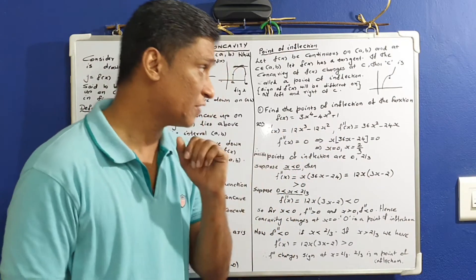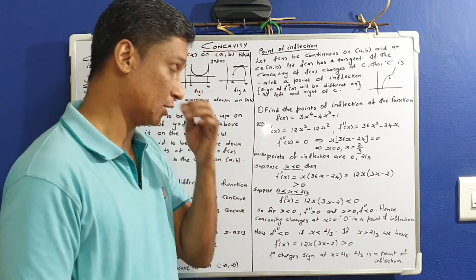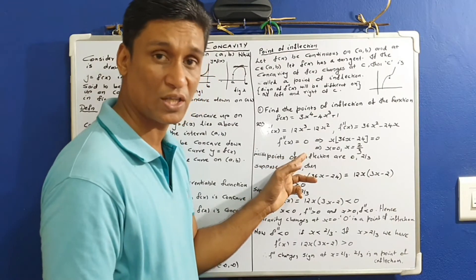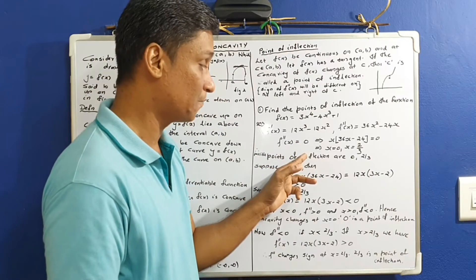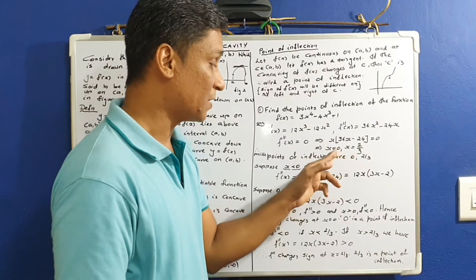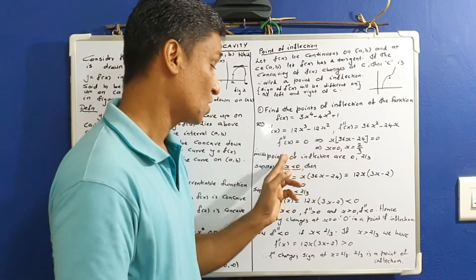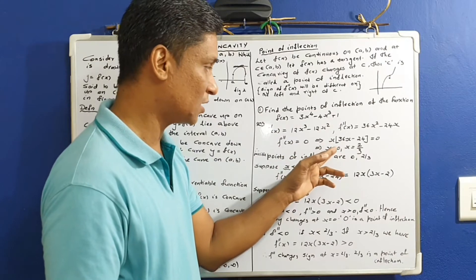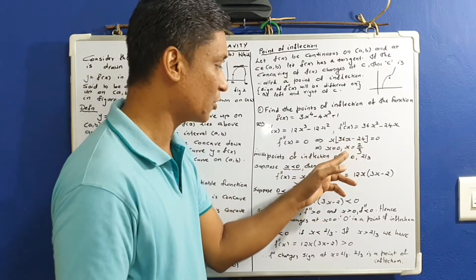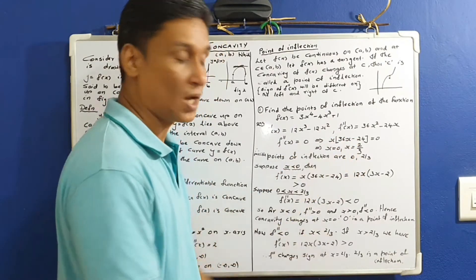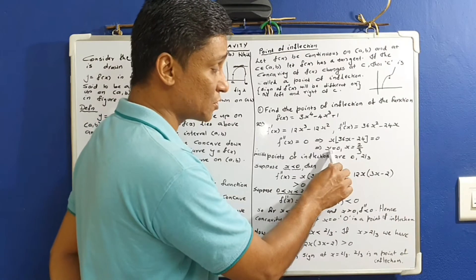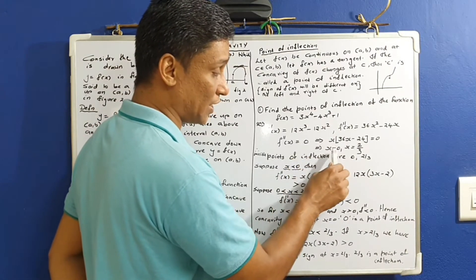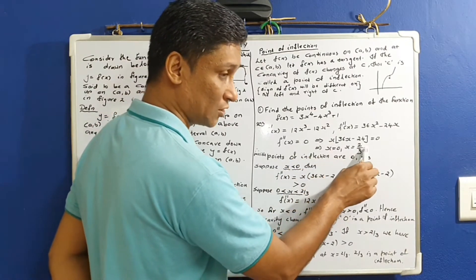If the point of inflection is where f double dash x equals 0, setting f double dash x equal to 0 in critical equities, these are the possible critical points of inflection. Setting f double dash x equal to 0, you get x equal to 0 and x equal to 2 by 3.